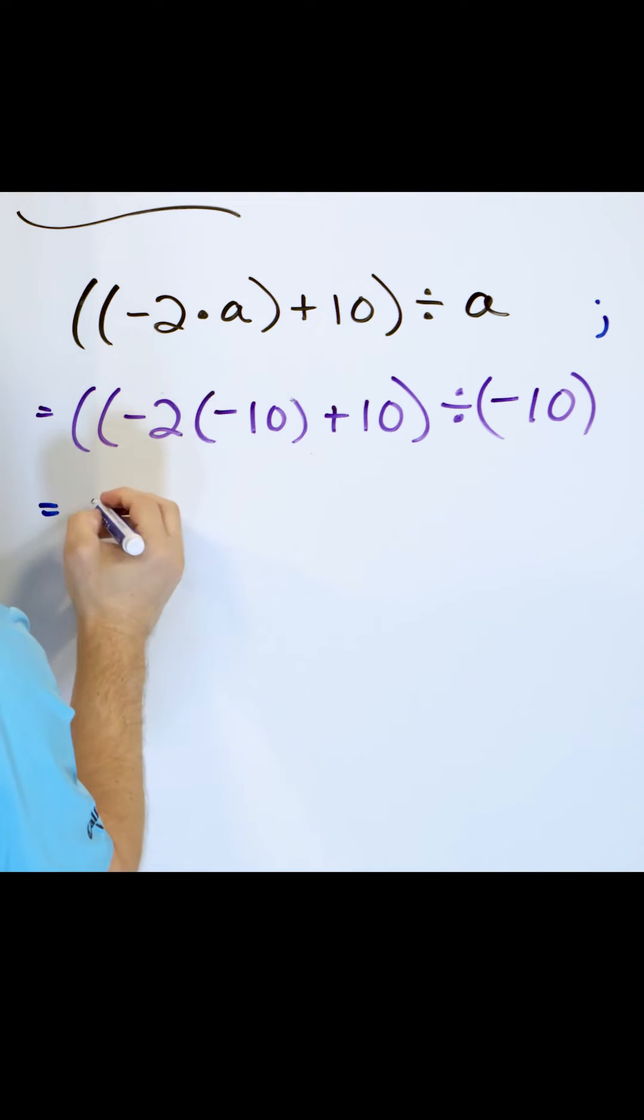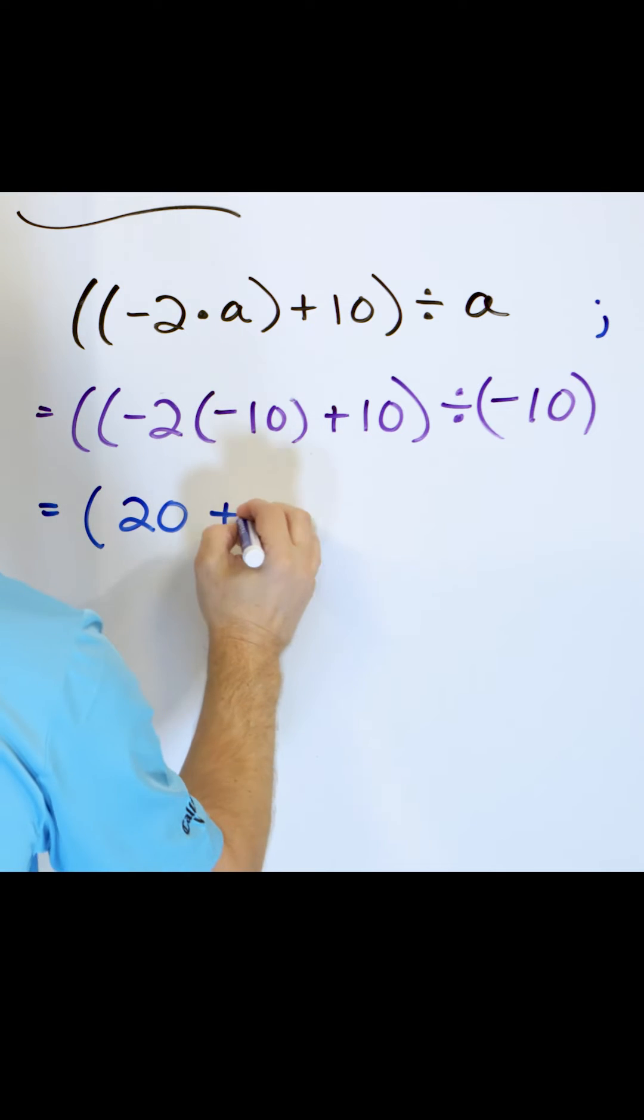Inside we have multiplication and also addition. The multiplying happens first. Negative times negative is positive, 2 times 10 is 20, so it's positive 20.